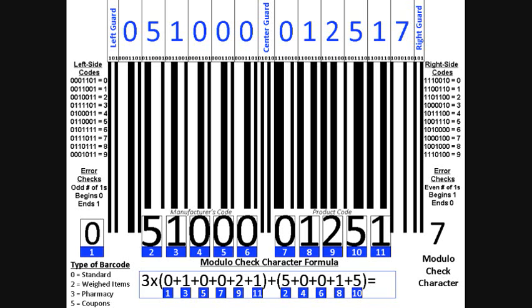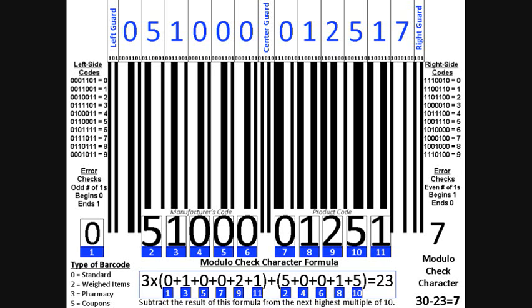So we'll go ahead and plug in the numbers from our barcode, and we come up with a final total of 23. We then subtract the result of this formula from the next highest multiple of 10 to get the modulo check character. The next highest multiple of 10 after 23 is 30, and 30 minus 23 is 7. So we know that we have read the barcode correctly. So now you've learned barcodes in one lesson.